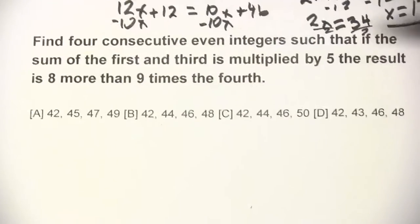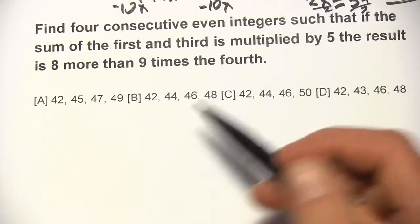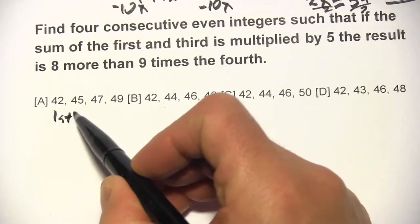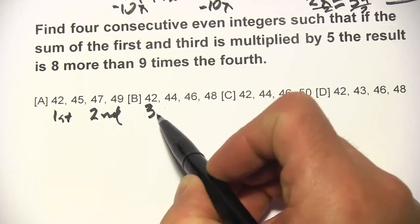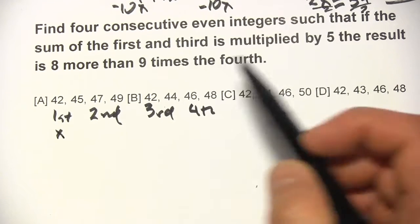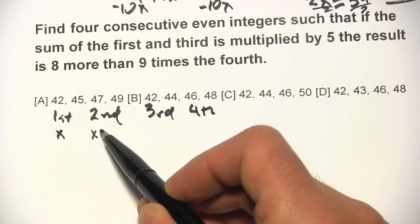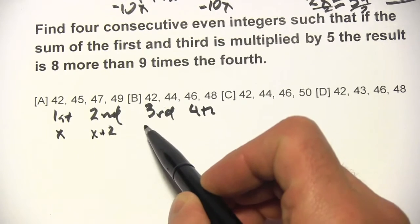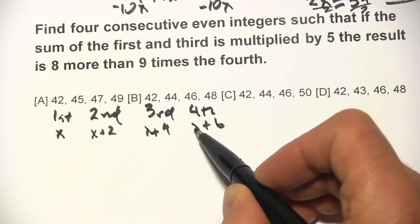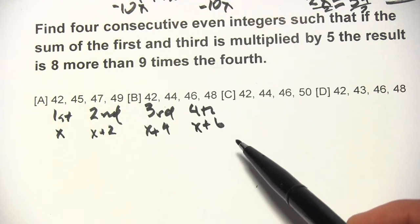All right, let's try one more. Here we have to find 4 consecutive even integers. So let's set them out: the first, the second, the third, and the fourth. The first we can call x. Since these are consecutive even integers, they go up by 2 each time: x plus 2, x plus 4, and x plus 6. So those are the first, second, third, and fourth consecutive even integers.